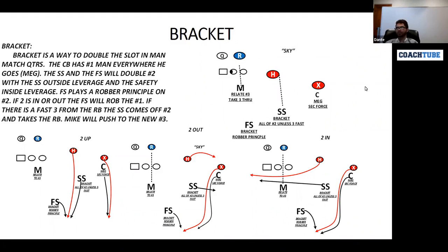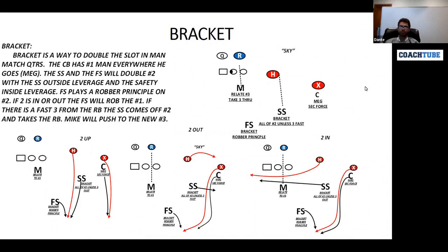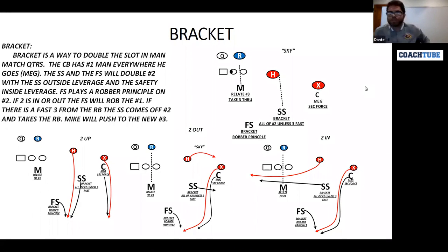The second way you can play the strong safety and free safety: the strong safety plays outside and high on the number two receiver — high shoulder — and the free safety plays a much more aggressive robber principle where he's going to undercut routes of number two. Now he's going to be a flat-foot defender as the strong safety scooches out, looking to undercut vertical routes of number two. So the strong safety is on top and the free safety is playing low shoulder. If playing that way and two goes in or out, the free safety will play inside and underneath or inside and low when going to rob routes of number one.